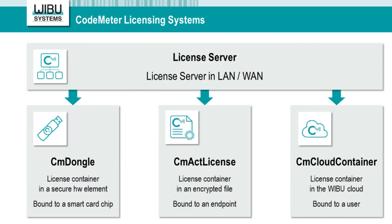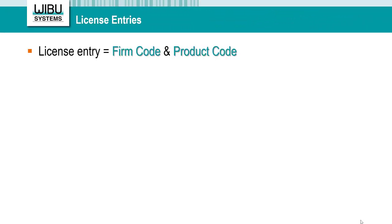All three types of CM containers can be used with a license server in a local or wide area network. This is how you can set up floating network licenses, also known as concurrent network licenses. Let's circle back to the terms Firm Code and Product Code where we began. A license consists of a Firm Code and Product Code. We've already learned that we need to use the same Firm Code and Product Code during both the software protection and the license creation phases.